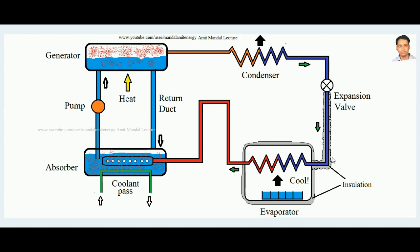This high-pressure ammonia is sent to the condenser, where it liberates heat and comes out in liquid form. The condensed ammonia then passes through the expansion valve and through the evaporator, where it absorbs heat and becomes vapor again. This vapor goes back to the absorber, mixes with cold water, is pumped to the generator, and is liberated again — completing the cycle.